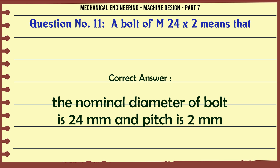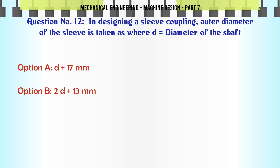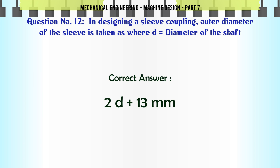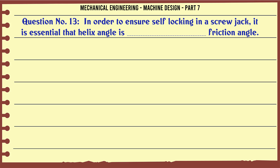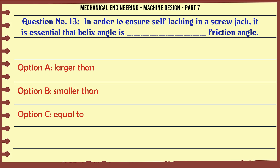In designing a sleeve coupling, the outer diameter of the sleeve is taken as: a) D + 17 mm, b) 2D + 13 mm, c) 2D + 20 mm, d) 3.5D. The correct answer is 2D + 13 mm.